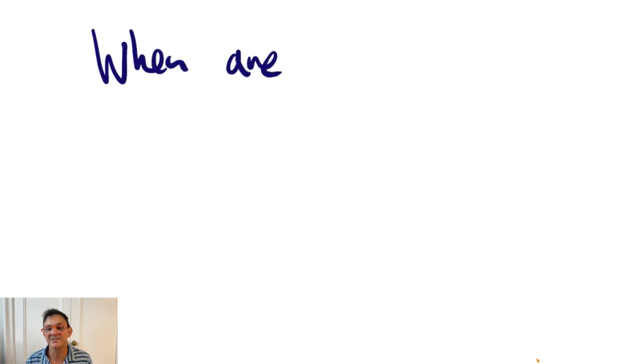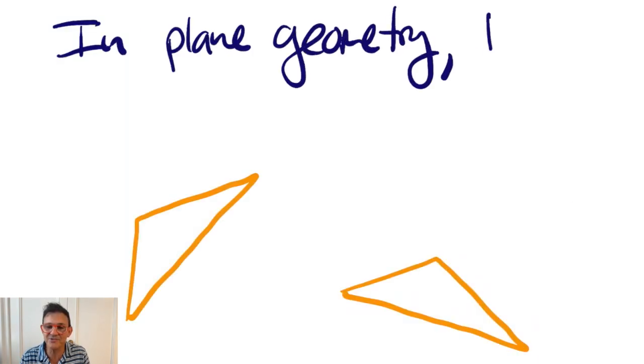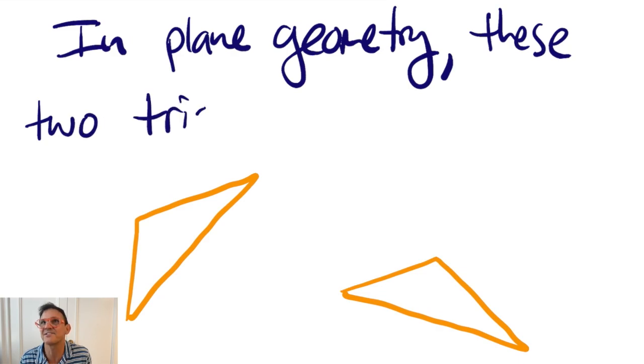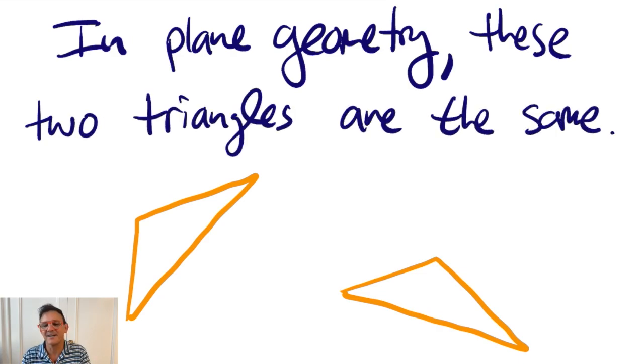Let's look at a situation you're probably familiar with. In plane geometry, these two triangles are considered the same. Sometimes people call that congruent. And why are they considered the same? Because there's a rigid motion of the plane that takes one to the other. In this case, I actually copy and pasted one and rotated it a little. But the idea here is that there's some set of transformations. We specify a set of maps here, rigid motions of the plane, and we declare objects to be the same if they're related by one of these maps.